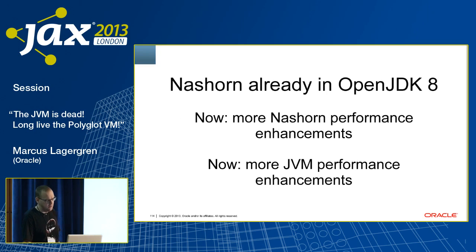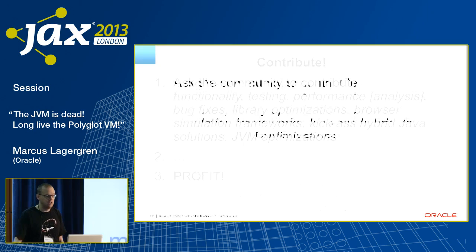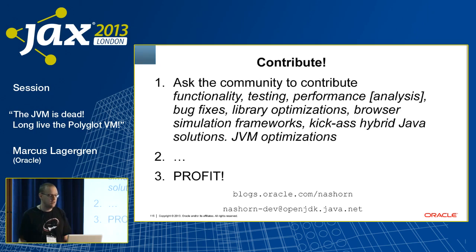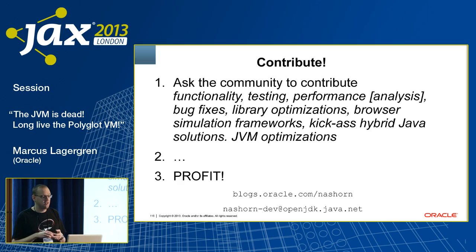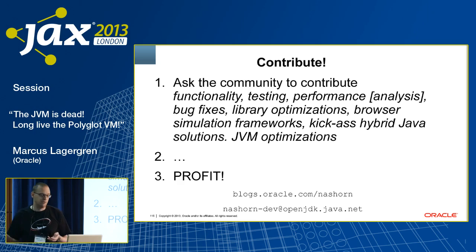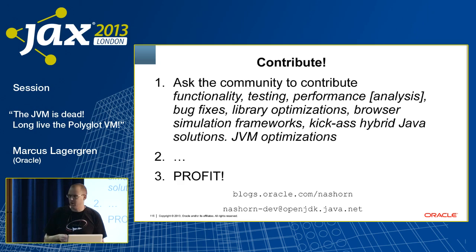Nashorn is already in OpenJDK 8. You can sync out a repo today and check out the code, build it, and test it. We're working on performance enhancements both in Nashorn and the JVM. As it's an open JDK project, we want the community to contribute — functionality, testing, performance analysis, bug fixes. There's a guy in Switzerland who runs JSFuzz every night and produces the most weird JavaScript examples that crash every known JavaScript runtime and sends them to us, and we fix the bugs. We want to see your hybrid Java solutions, proof of concepts, guest posts on the Nashorn blog. I encourage you to check out the Nashorn blog and join the Nashorn mailing list.